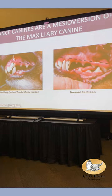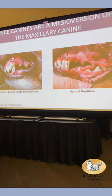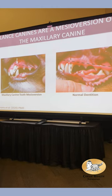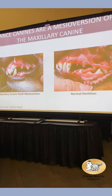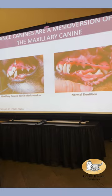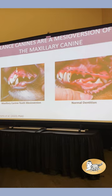Lance canine is not a great thing. It causes ulceration in the mouth, can cause periodontal disease, and can be uncomfortable for the dog because the canine doesn't occlude the mouth properly. Ultimately this tooth has to be extracted. And if you walk into a show ring and your dog has a crooked canine or no canine, there's a problem. This is something the Shetland Sheepdog health group approached me about studying.